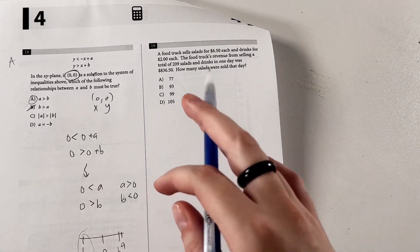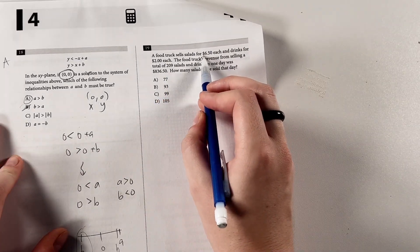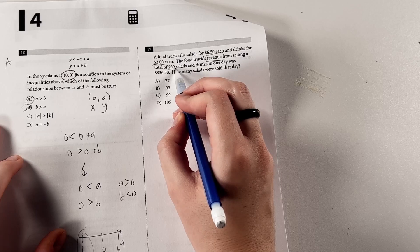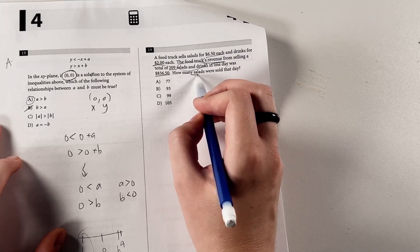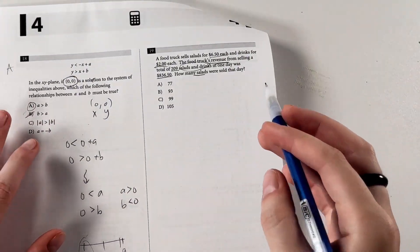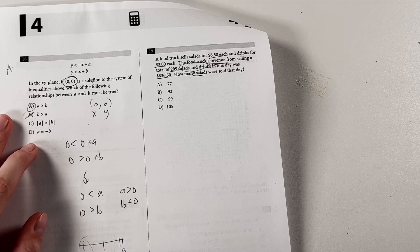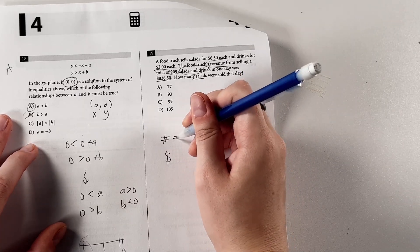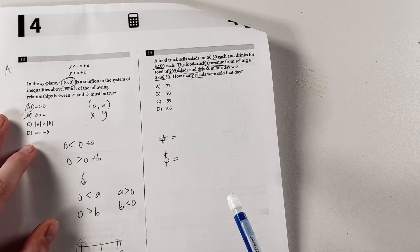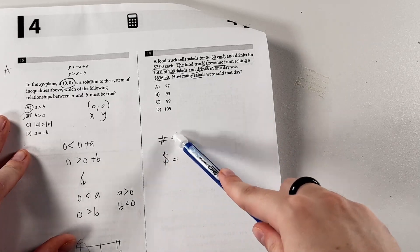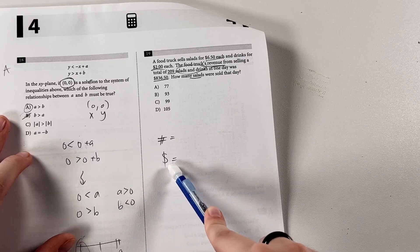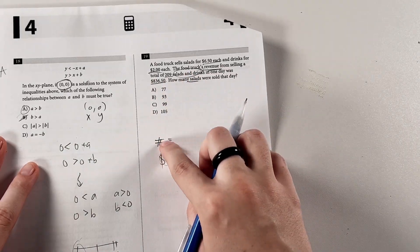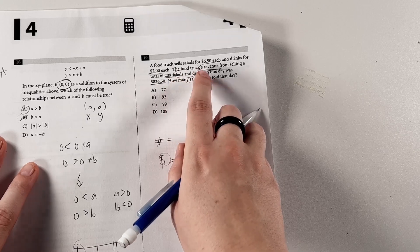Now we have a word problem where we're trying to make a system of equations. So, food truck sells salads for $6.50 each and drinks for $2 each. The food truck's revenue from selling a total of 209 salads and drinks in one day was this amount. How many salads were sold that day? So, these can get a little tricky, especially if you're not used to just creating these equations out of thin air. But in general, we're going to have one equation equal to the total cost, and one equal to total amount of things. So that's what we're aiming for, given this information. And maybe these two things will vary based on the question, but it's usually the number of something, total number, and total revenue, or maybe total pages turned, or something weird like that.